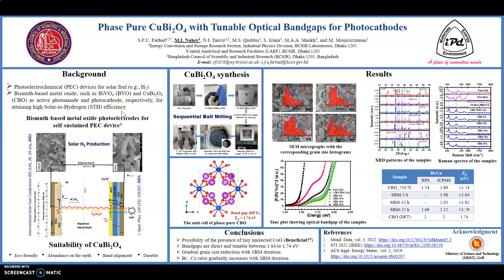Our prime objective is to build a photoelectrochemical device for solar fuel such as hydrogen production. The prototype of our self-sustained photoelectrochemical device is shown here, where we choose bismuth-based metal oxides — namely bismuth vanadium oxide and copper bismuth oxide — as active photoanode and photocathode materials respectively. We put all the extra layers for attaining an energetically favorable transport pathway for carriers. We have already studied our active photoanode material, which is published in Journal of Applied Physics.